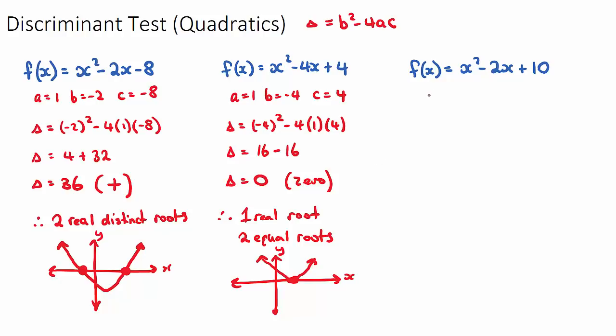The last one, if we do the discriminant, so a is 1, b is negative 2, and c is 10. Our discriminant will be b squared minus 4 times a times c. So our discriminant will be 4 minus 40. So our discriminant will be negative 36. The number 36 isn't super important. The fact that it's a negative is, so we can say this is a negative number.